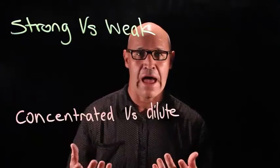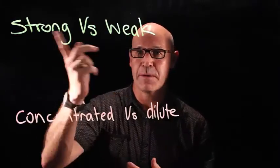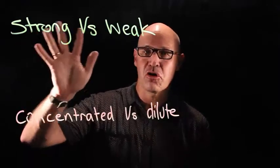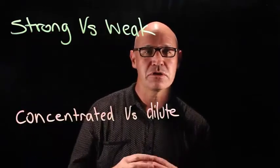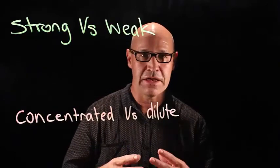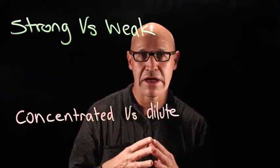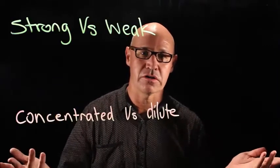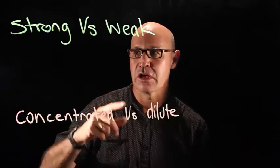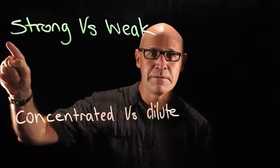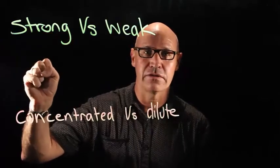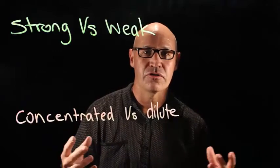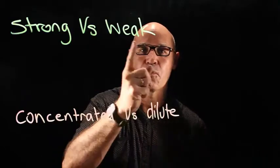When we're talking about acids and bases, there are a couple of different terms we need to be clear about. When we're talking about strong versus weak, we're talking about the properties of the acid and the base, and how readily they release their hydrogen or hydroxide ions into solution. If they release it readily, they're called strong acids and strong bases. If they release their ions less readily, they are weak.